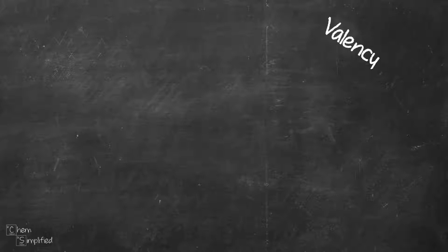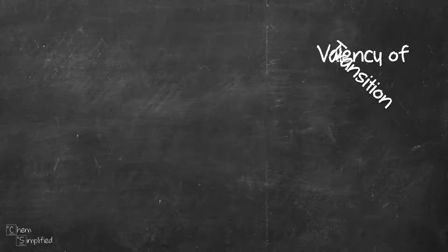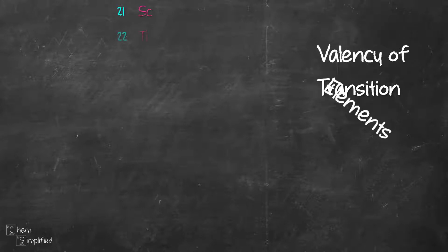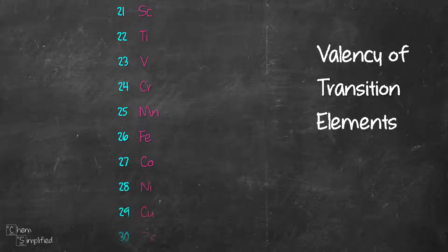Moving on to the next 10 elements, it's not as straightforward since they are the transition elements. Most of them have multiple valency, so this is the best of what I can come up with.